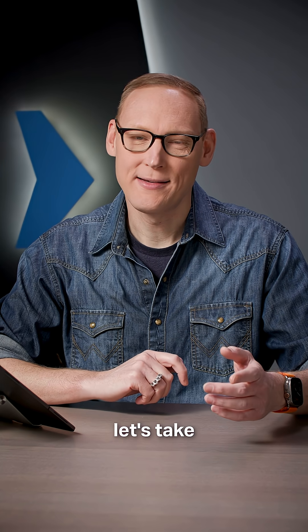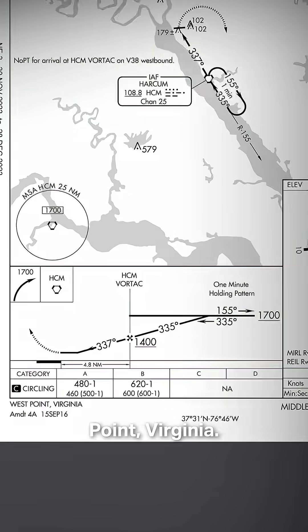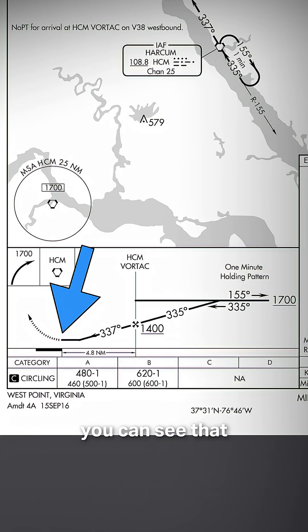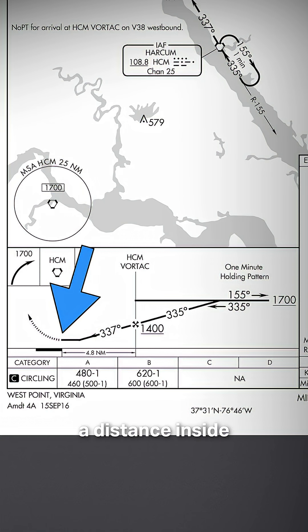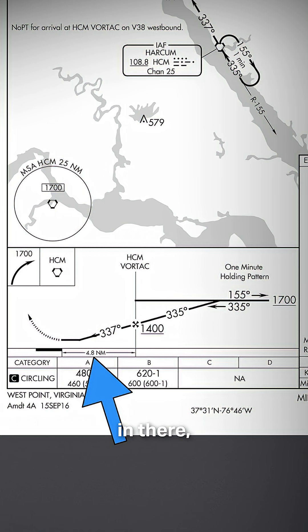For the opposite case, let's take a look at a VOR approach. This is the VOR Alpha at Middle Peninsula Regional in West Point, Virginia. When we look at the profile, you can see that our missed approach point does not have a fix associated with it, nor do we have a distance inside of that D icon. Now that missed approach point is 4.8 nautical miles away from the Harcum Vortac, but since there's no D icon with the distance in there, we can't actually use real DME to identify that point.